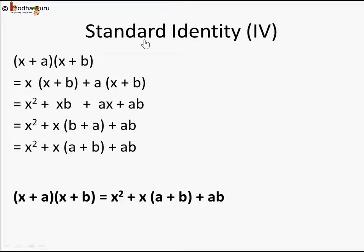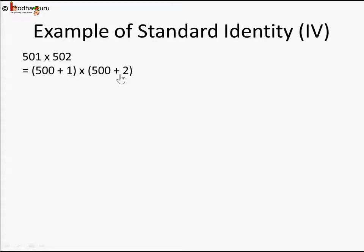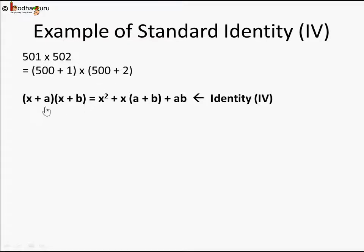Let's see its use. Say we are given 501 × 502. We can represent 501 as 500 + 1 and 502 as 500 + 2. So for any two numbers whose multiplication is very close to hundreds, tens, or thousands, we can write them like this. Here x is the same — 500 in both — and the other numbers are the differences.